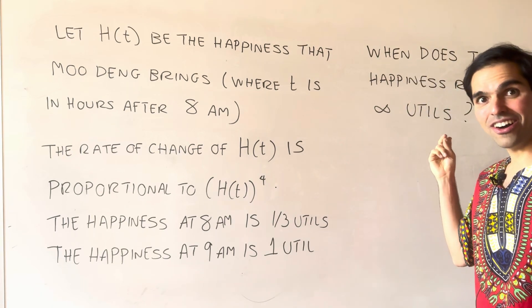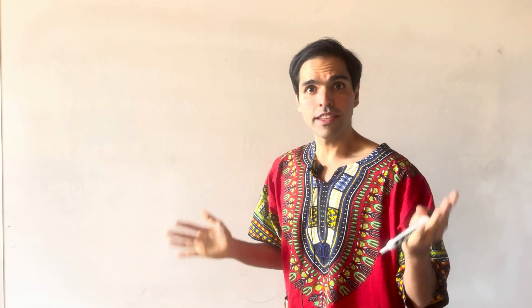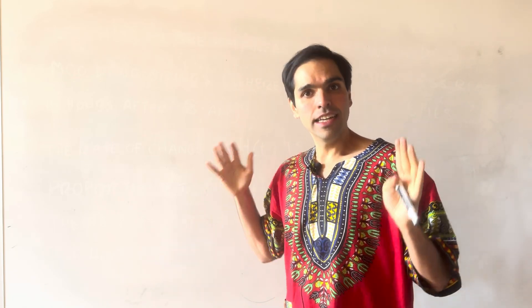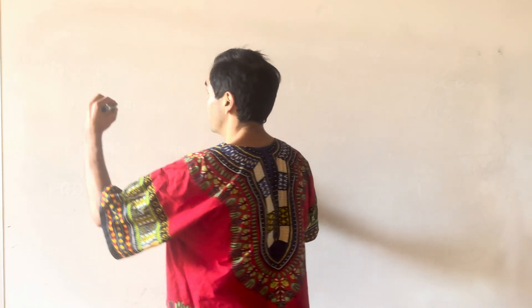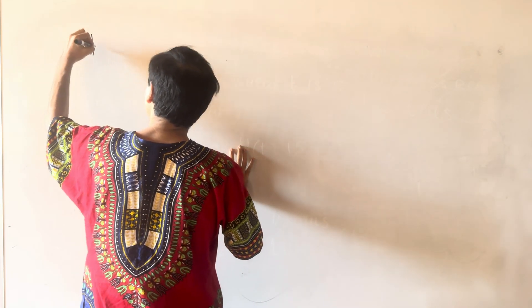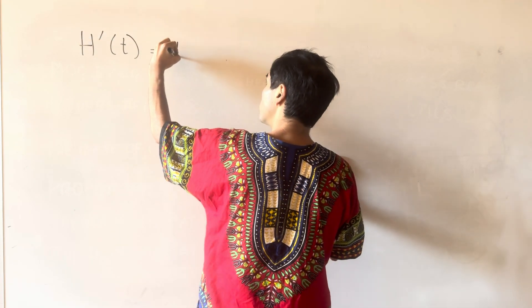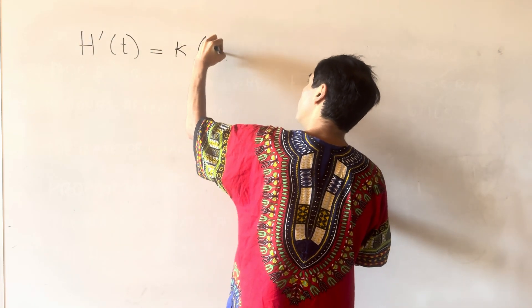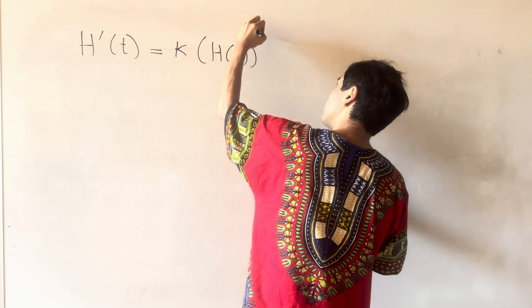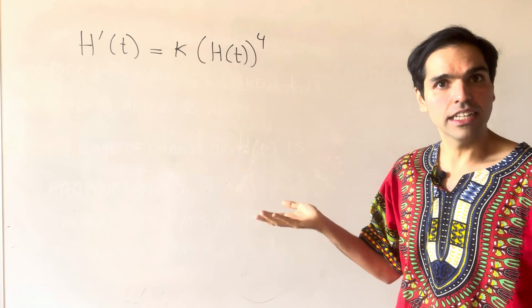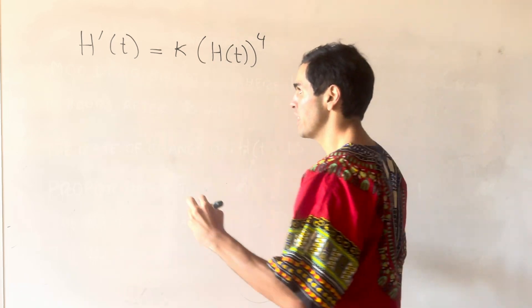All right, so now let's solve this. The first thing we know is that the rate of change of happiness is proportional to the fourth power of the happiness. In other words, H prime of T is proportional, so it's a multiple of the fourth power of H. And this is a differential equation that we can solve using separation of variables.